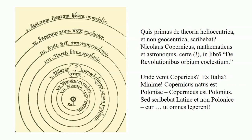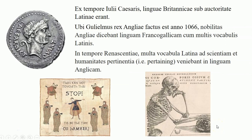What can you read in this picture? Sol, Mercurii, Venus, Telluris — that is, Terra — Martis, Jovis, Saturnus, et stellarum fixarum sphaira immobilis. Who first wrote about the heliocentric theory, and not the geocentric? Nicolaus Copernicus — mathematician and astronomer, certainly. In his book De Revolutionibus Orbium Coelestium. That's where we get the word celestial — caelestium, coelestium.